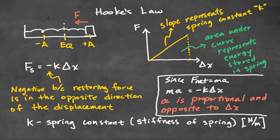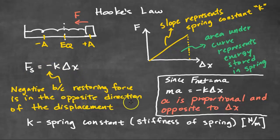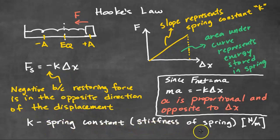So we know that the restoring force and the displacement are related to each other — and that's what Hooke's Law answers. Here we have a horizontal spring pulled to the right, with a restoring force to the left towards the equilibrium. Hooke's Law states that the spring force is equal to negative K times the displacement. There's a negative in this equation because the restoring force is in the opposite direction of the displacement. K is the spring constant, which tells us the stiffness of the spring — the more stiff the spring, the greater the spring constant. The unit for the spring constant is Newtons per meter.